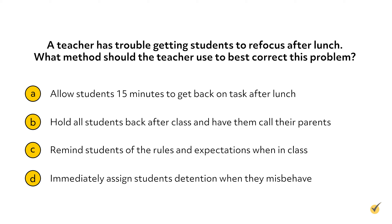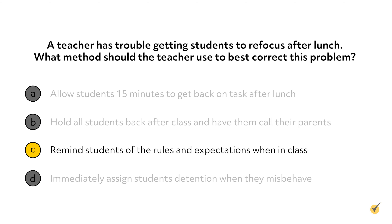The next tip is to focus on the answer that is the most developmentally appropriate and allows for the most reasonable learning experience. Pedagogy and special education tests typically look for ways to ensure that the setup of the classroom you have created is age appropriate and allows for the best use of class time. Let's look at a few examples. A teacher has trouble getting students to refocus after lunch. What method should the teacher use to best correct this problem? Allowing the students 15 minutes to get back on task wastes valuable learning time. Punishing them by holding them after class or assigning detention would penalize them, which isn't effective and can be especially inappropriate depending on the age of the students. Those types of punishment also do not help them immediately get back on task. Reminding the students of the rules and expectations is the most reasonable and productive way to support your students.